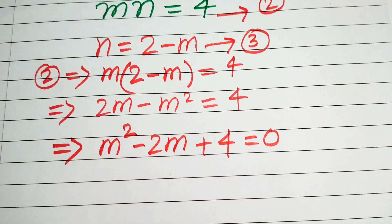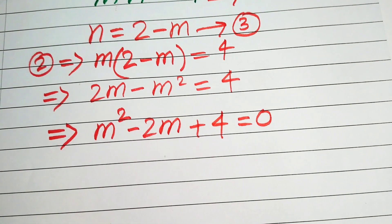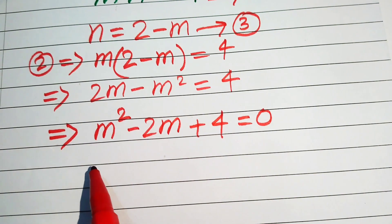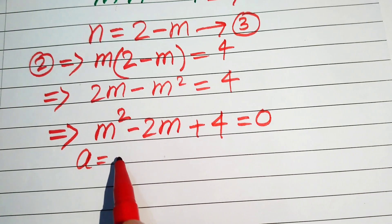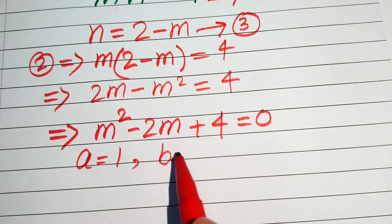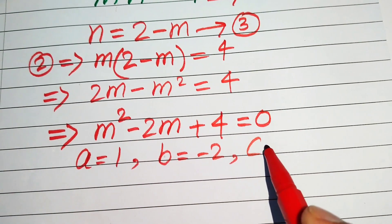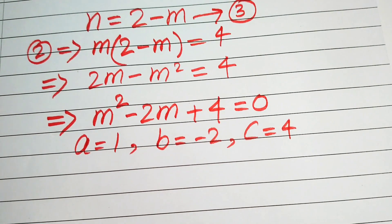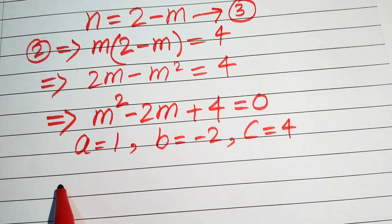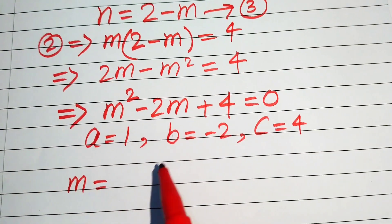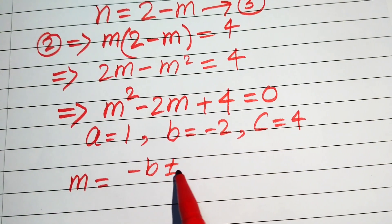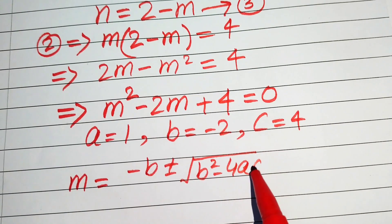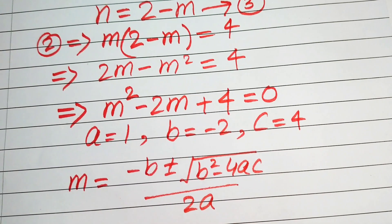This is a quadratic equation, so we use the quadratic formula to solve it. The coefficients are a equals 1, b equals minus 2, and c equals 4. The quadratic formula is: m equals negative b plus or minus square root of b squared minus 4ac, all divided by 2a.